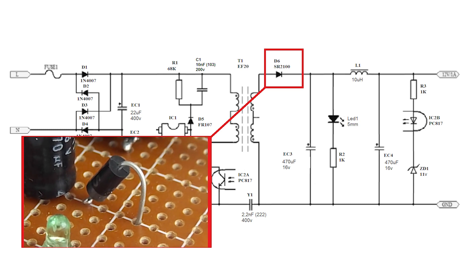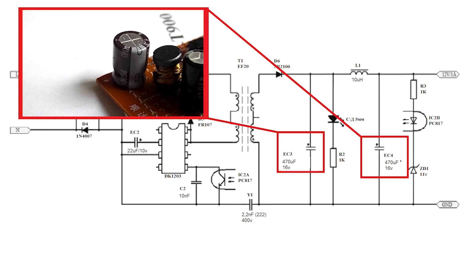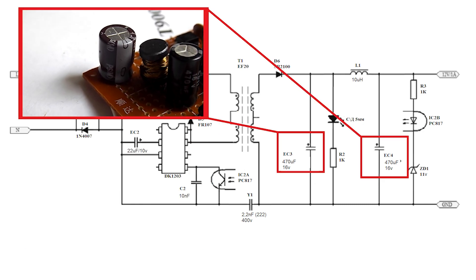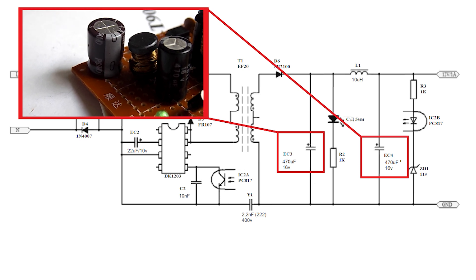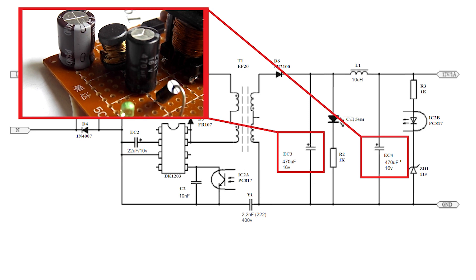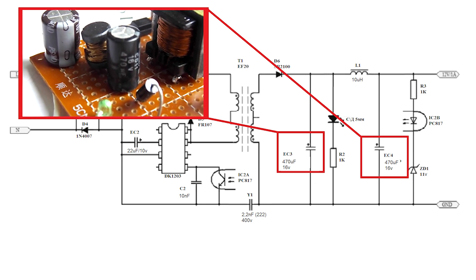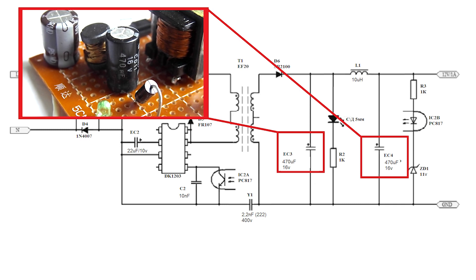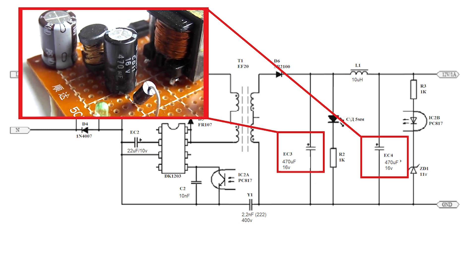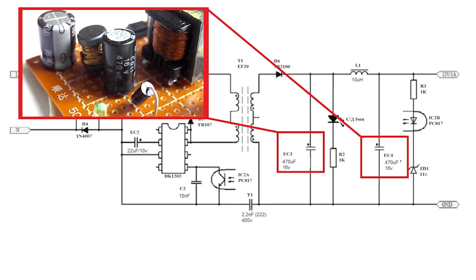D6 is a low dropout Schottky diode marked SR2100. EC3 and EC4 are 470 microfarad 16 volt electrolytic capacitors. It is advisable to take them with low internal resistance. But if someone does not have these, you can put the usual ones. Just keep in mind that they will heat up more and moreover, EC3 will heat up more than EC4.